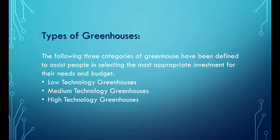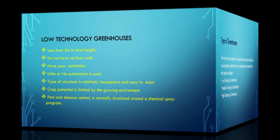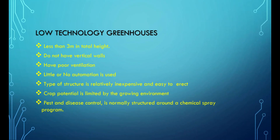Three categories of greenhouse have been defined to assist people in selecting the most appropriate investment for their needs and budget: Low-Technology Greenhouses, Medium-Technology Greenhouses, and High-Technology Greenhouses. The characteristics of low-technology greenhouses are: less than 3 meters in total height, do not have vertical walls, have poor ventilation, little or no automation is used, the type of structure is relatively inexpensive and easy to erect, and crop potential is limited by the growing environment. Pest and disease control is normally structured around a chemical spray program.